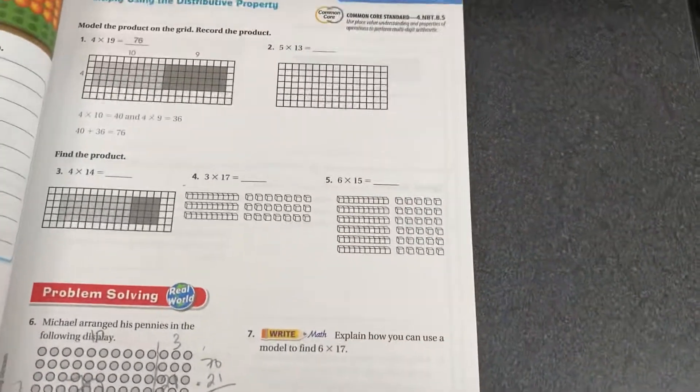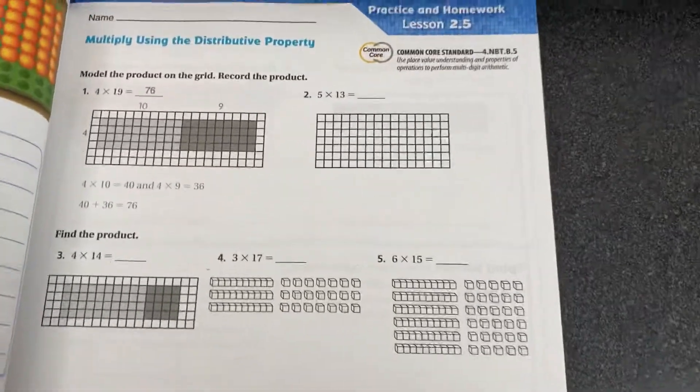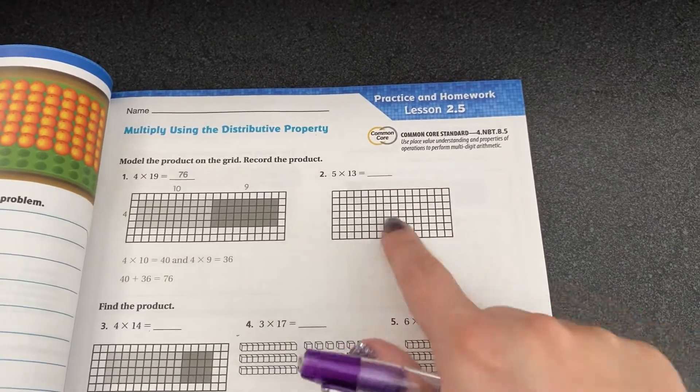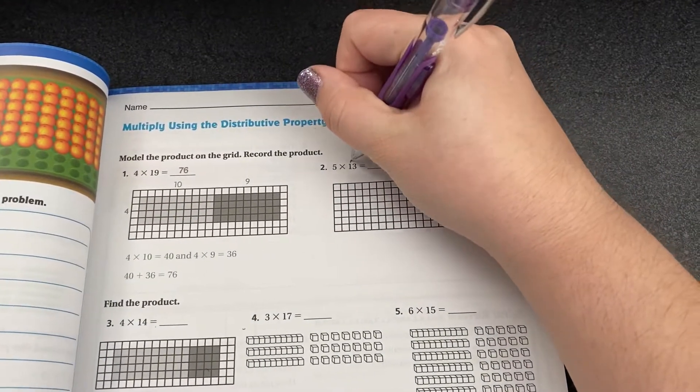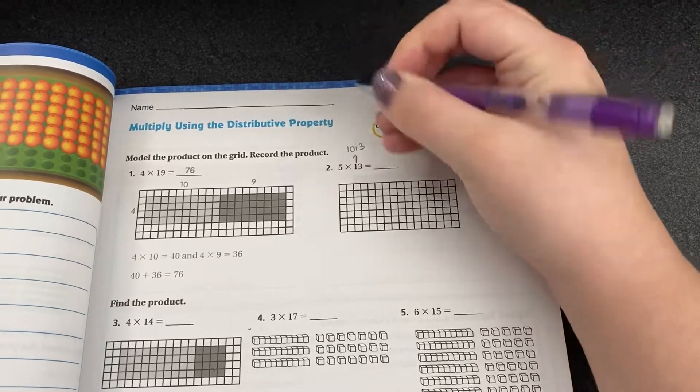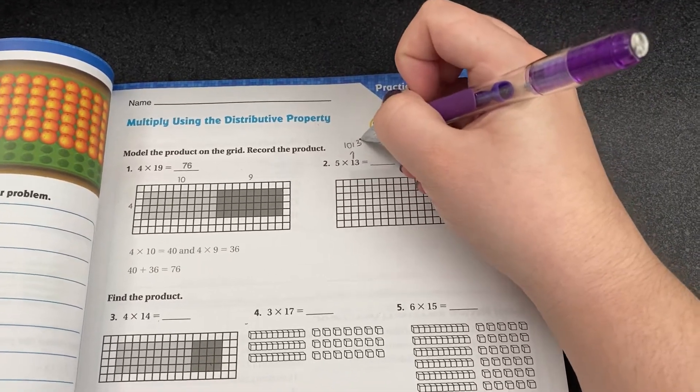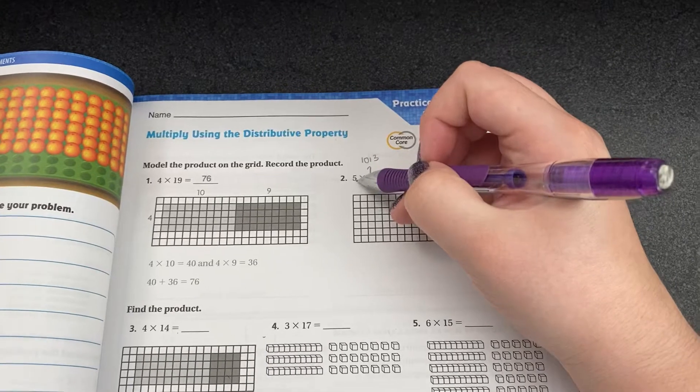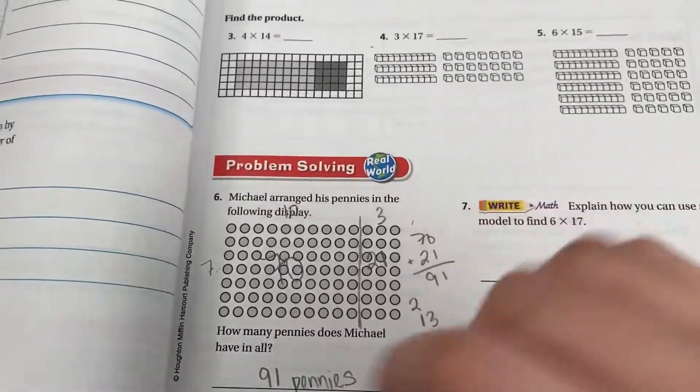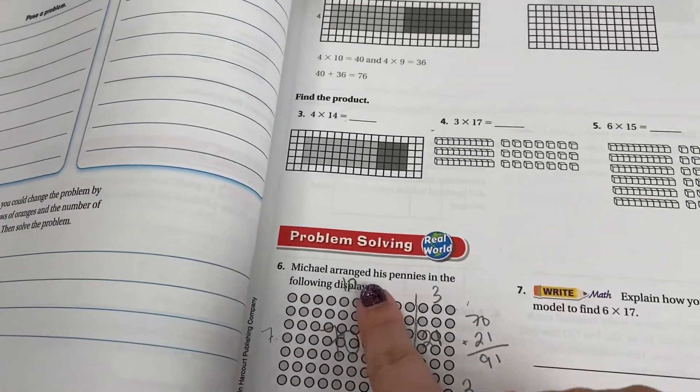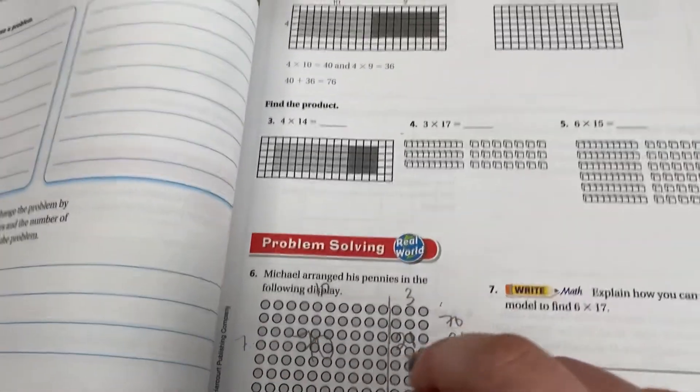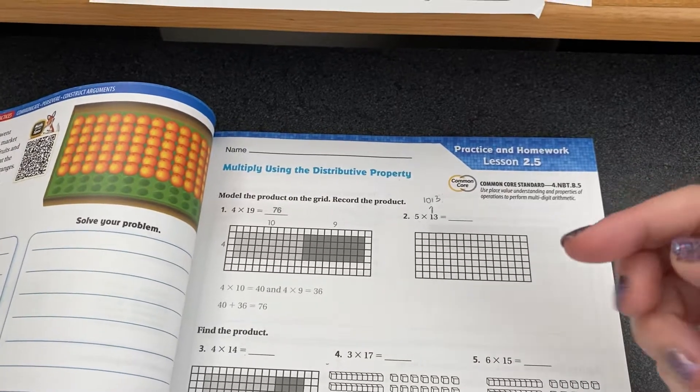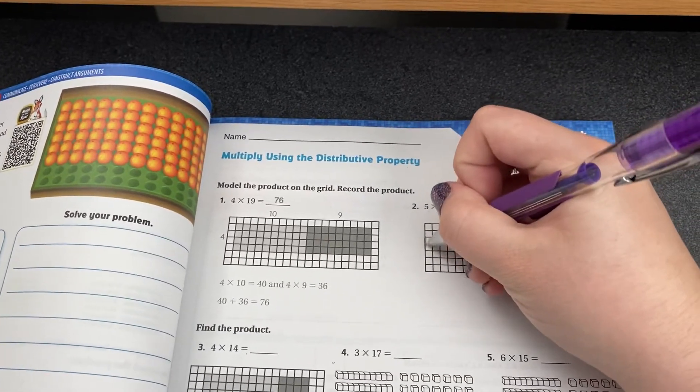So I'm going to look at number two. They gave me a little grid box to help me keep organized. They want me to do five times thirteen. Again, I don't know what that is off the top of my head. But if I break that up into thirteen's expanded form, which is ten plus three, then I can multiply five times the group of ten and five times the group of three, just like I did down here.